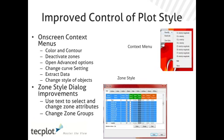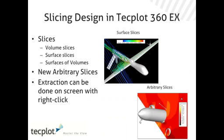We also implemented changes to slicing, including arbitrary slicing, as well as the ability to extract slices on screen. This is very helpful since we've implemented surface slices — you can slice along the wing or body and with one click extract those slices for further analysis and plotting.